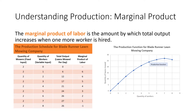The last column of the production schedule reports the increase in output for each additional worker hired. Economists use the word 'marginal' to mean additional, so the increase in total output from hiring an additional worker is called the marginal product of labor. For each of the first two workers Blade Runner hires, the marginal product of labor is six lawns. After the second worker, each additional worker has a smaller marginal product than the previous one — five for the third worker, four for the fourth, three for the fifth, and so on.